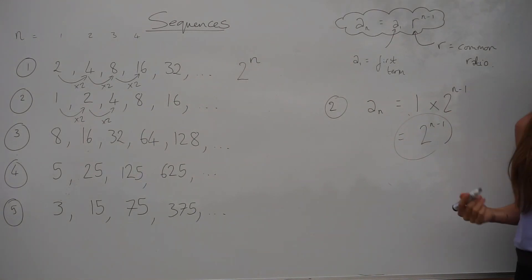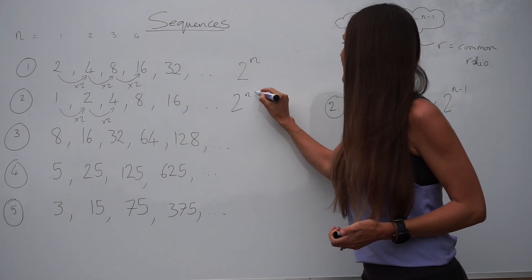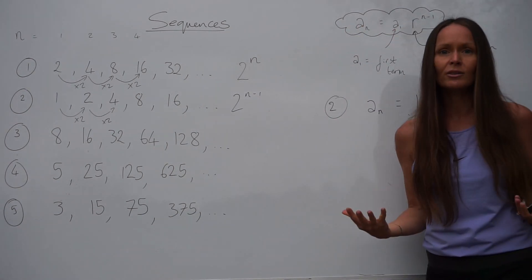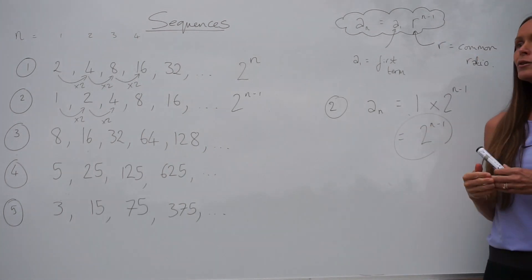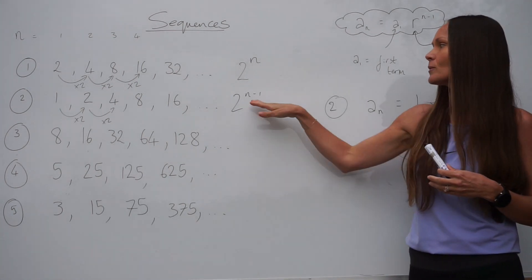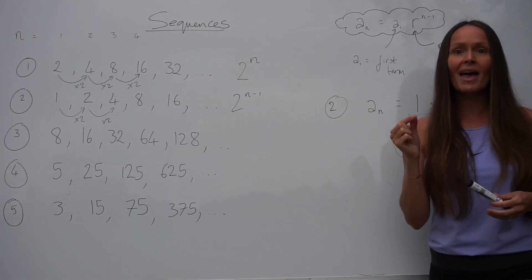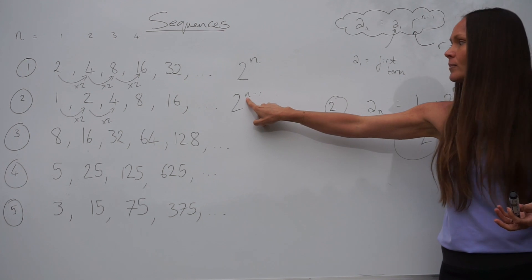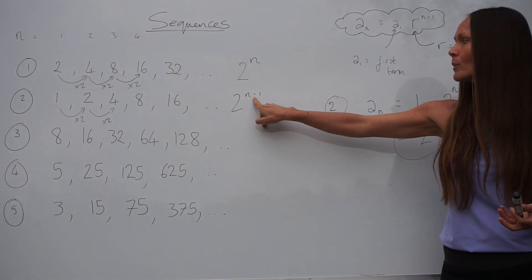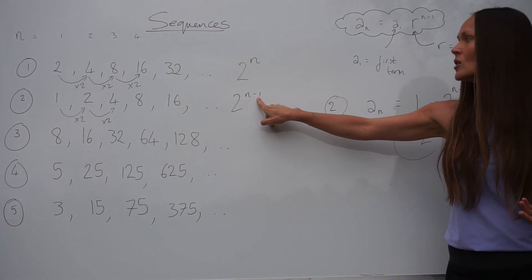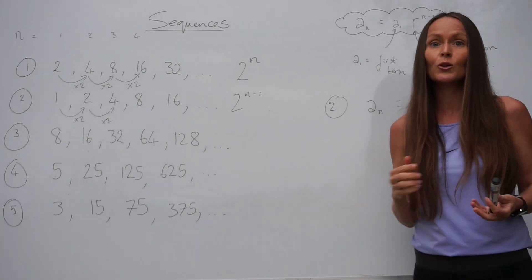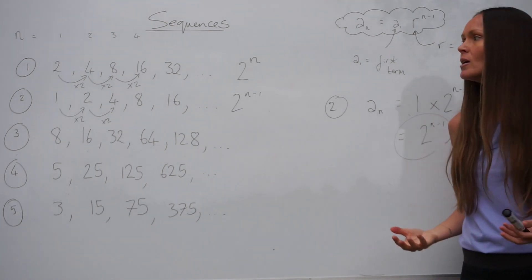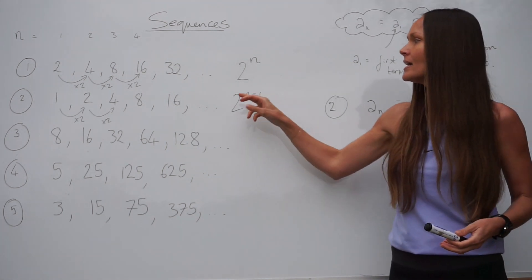So that's the nth term for question 2. Now, if you had to work out the 100th term — the 100th number in that sequence — you would just change the position number n to 100 and substitute it into your nth term. So 100 take away 1 is 99. You would work out 2 to the power of 99 — you can put that in your calculator — and it would give you the 100th term, the 100th number in that sequence.